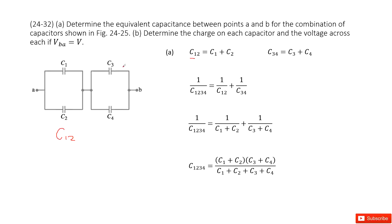Then we look at capacitors C3 and C4. This is also a parallel connection, so we have the equivalent capacitance C34 = C3 + C4. Now looking at the circuit from A to B, it can be considered as capacitors C12 and C34 in series.